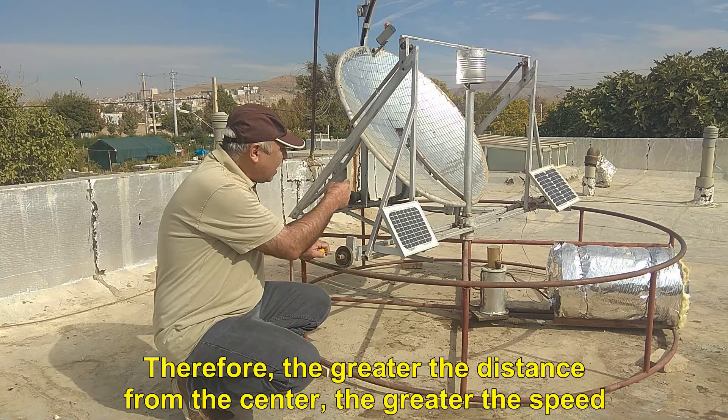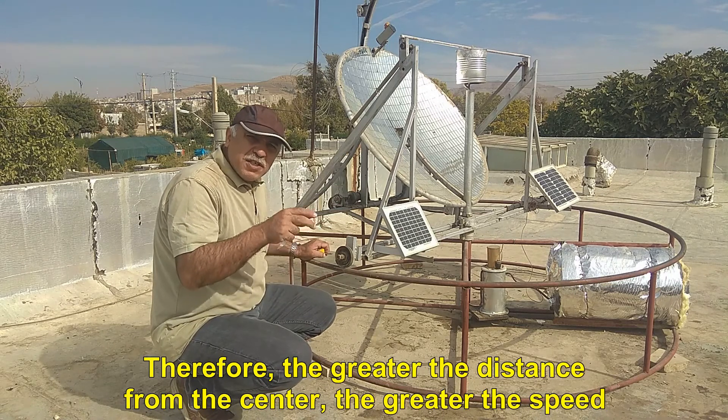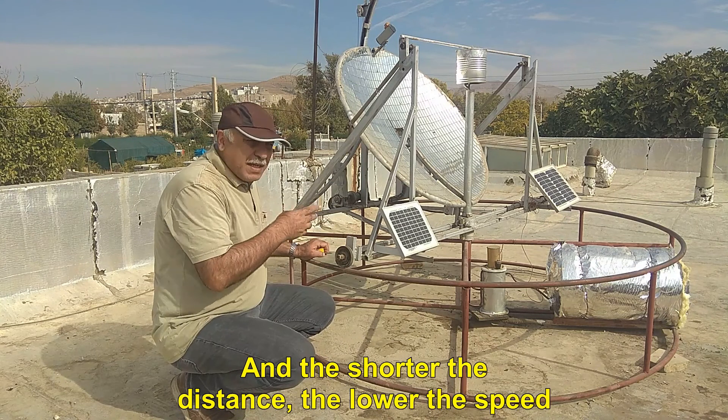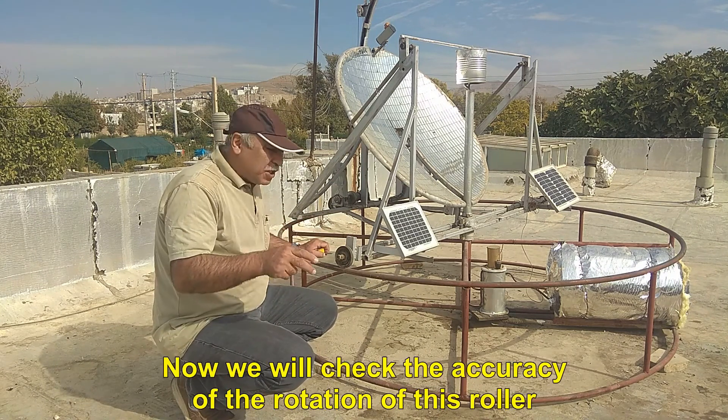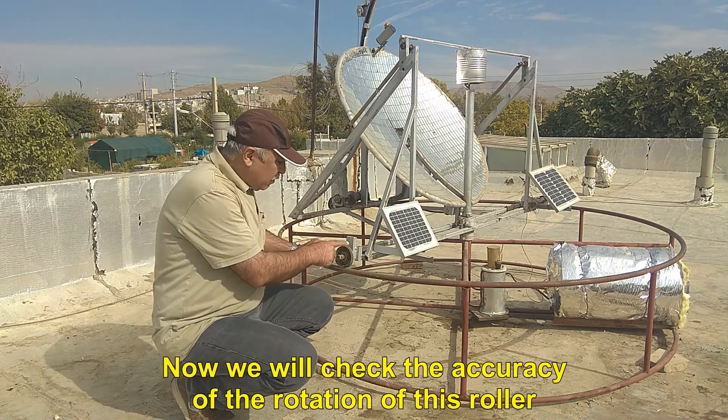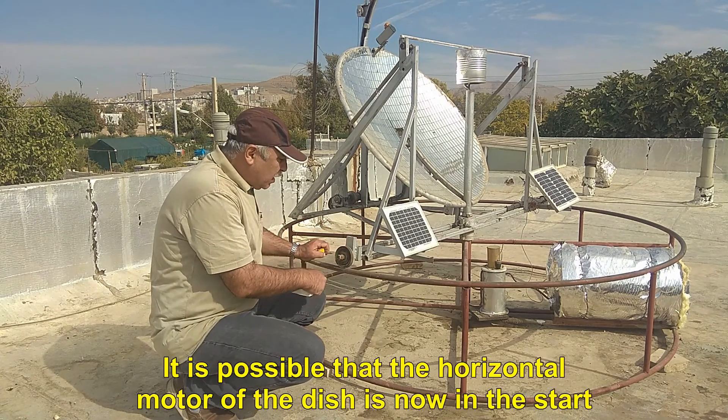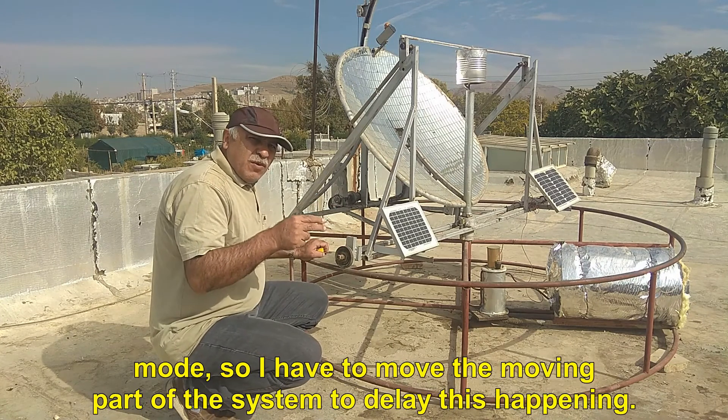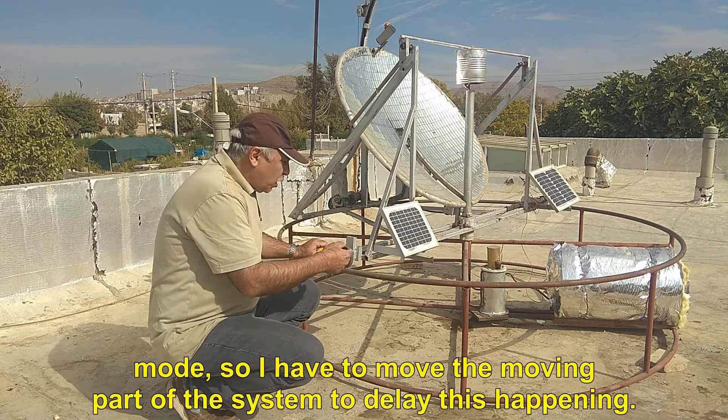Therefore, the greater the distance from the center, the greater the speed. And the shorter the distance, the lower the speed. Now we will check the accuracy of the rotation of this roller. It is possible that the horizontal motor of the dish is now in the start mode, so I have to move the moving part of the system to delay this happening.